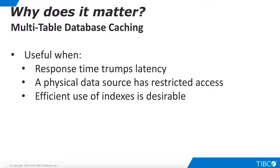These benefits apply to both single-table and multi-table caching. A specific benefit of multi-table caching is that it provides physical separation of cache versions, which means that indexes on a cache are more efficient and can be used more effectively. Single-table caches use a cache key column to maintain logical separation of current and previous cache versions. Data rows representing the previous expired version are not deleted until all transactions using the old version have completed. This means that old and new cache data may exist simultaneously in a cache for a period of time. TDV will use the appropriate cache key to ensure that correct data is always returned; however, database indexes built on cache columns may be inefficient because they will contain extraneous rows. Multi-table caching avoids this issue and enables indexes to be as efficient as possible.